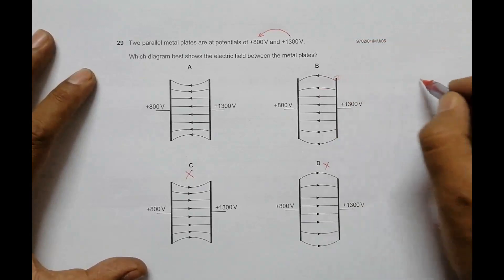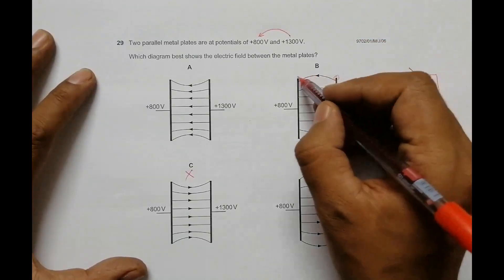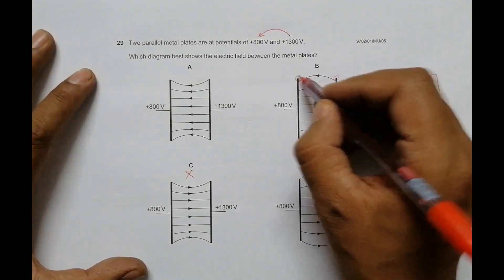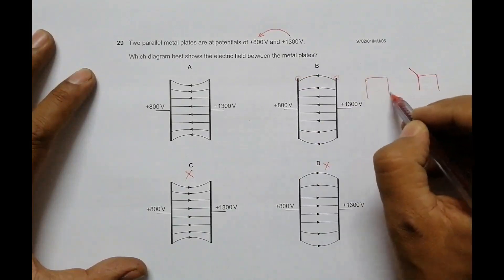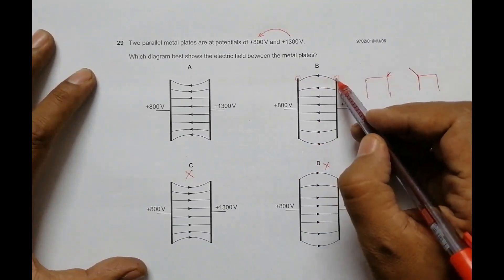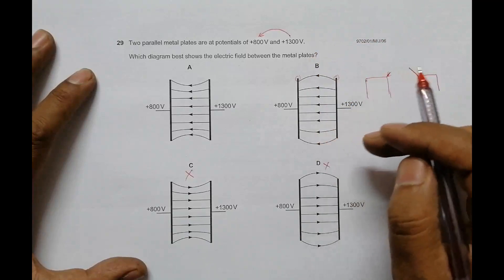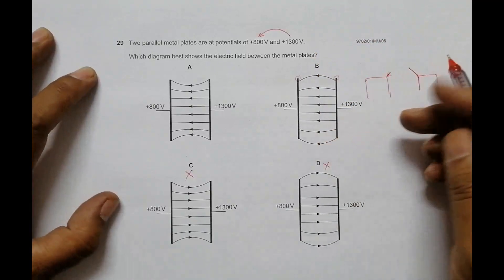If I draw this, the lines of force would be going somewhat like this. The lines of force will be coming like this, so that's why here the lines of force should go slightly out, and here slightly out. So option B seems to be the correct choice.